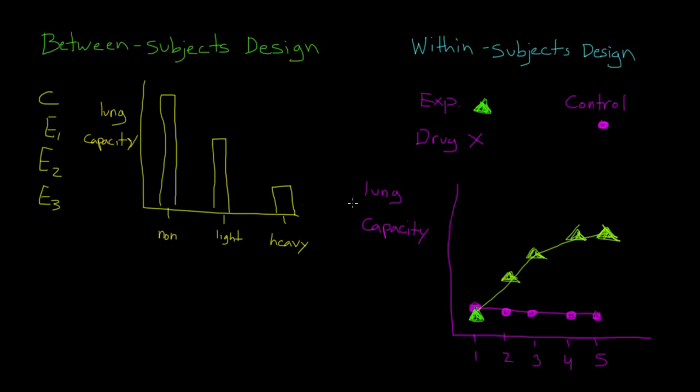So how can you tell these two study designs apart? Well, for between-subjects design, there will always be only one data point for each group. So here I have non-smokers, and here I have a summary score for all of the non-smokers. And here's a summary score for all of the light smokers, and here's one for all of the heavy smokers.